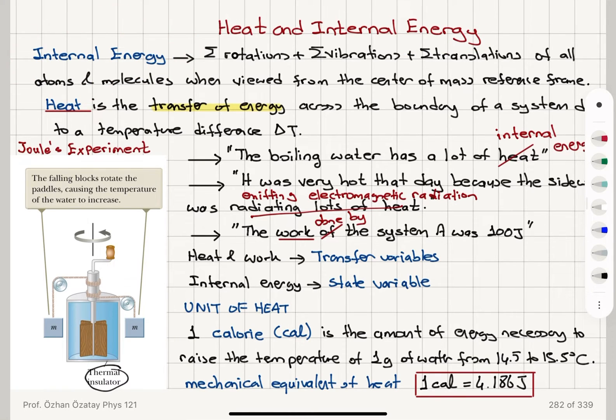Internal energy is total energy of the system, which has contributions from rotations, vibrations, and translations of atoms and molecules that make up the system. It's a state variable, whereas heat is the transfer of energy across the boundary of a system due to a temperature difference, delta T. And it's a transfer variable, just like work.